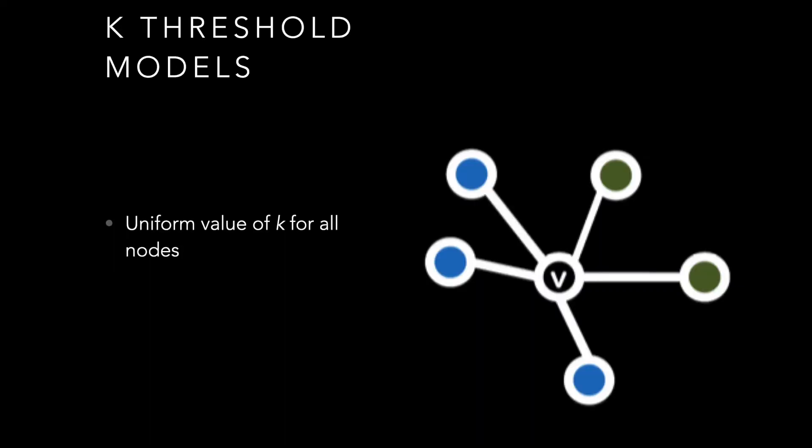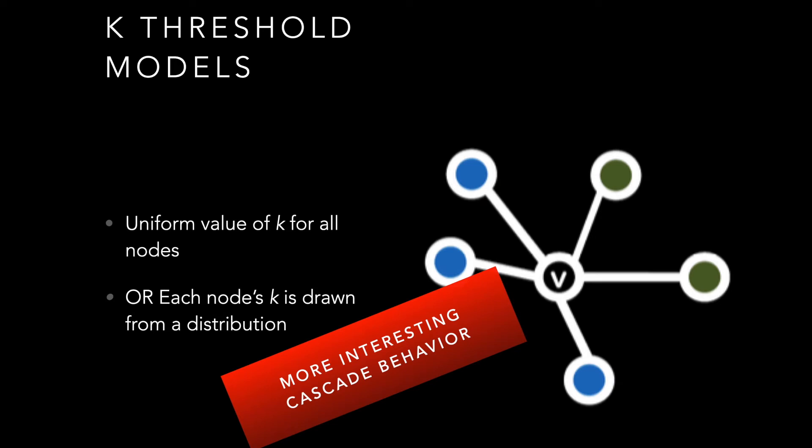In the simplistic model for K thresholds, we have a uniform value K for all nodes in the graph — every node has the same threshold, where I have to see K friends do some behavior before I adopt it. We can get more sophisticated by having a K value at the individual node level drawn from some distribution, which lets us integrate more stochasticity into the graph. As we do that, we get more interesting cascade behaviors, since different kinds of nodes should likewise have different thresholds.